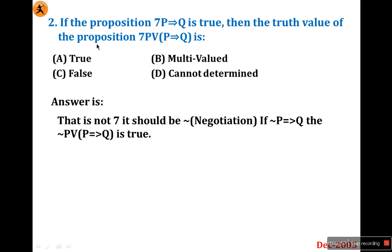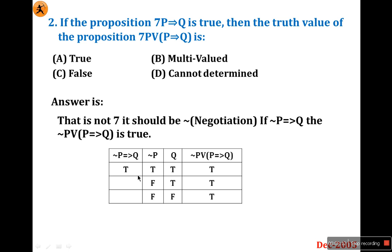So don't suddenly select 'cannot be determined' — check it carefully. Let us assume this is a negation symbol. So negation of P implies Q is true. The negation of P or P implies Q — we need its truth value. Negation of P implies Q being true means: in an implication, only when the first is true and the second is false does the result become false; in all other cases it is true.